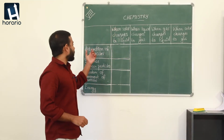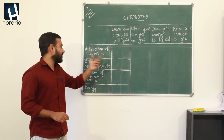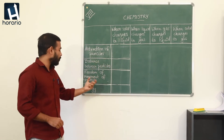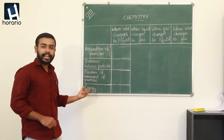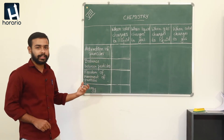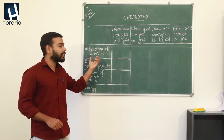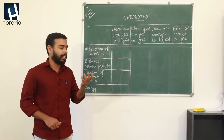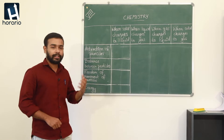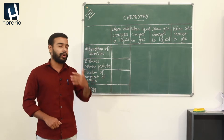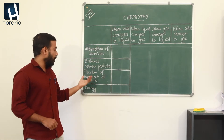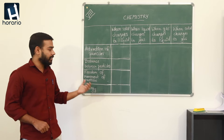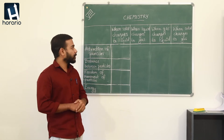We are focusing on four things: the attraction of particles, distance between particles, freedom of movement of particles, and energy of the particles. We are going to analyze whether the attraction of particles increases or decreases, whether the distance between particles widened or shortened, and whether the freedom of movement and energy is increased or decreased.